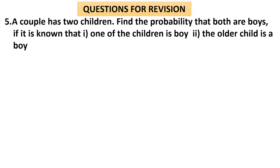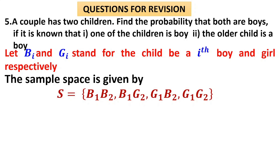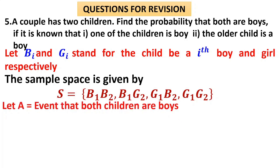Question 5: A couple has two children. Find the probability that both are boys if (i) one of the children is a boy, and (ii) the older child is a boy. Let B1, B2 denote first and second child being a boy, and G1, G2 being a girl. The sample space is: {B1B2, B1G2, G1B2, G1G2}. Event A — both children are boys — is {B1B2}.